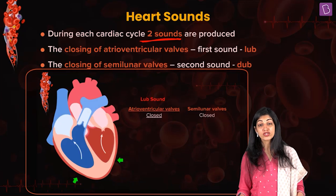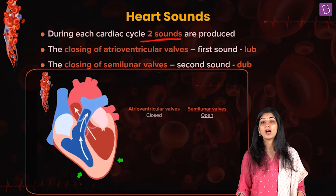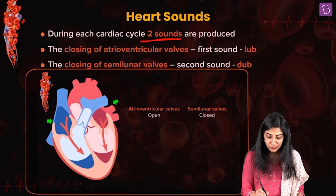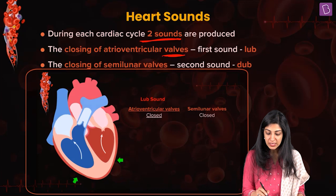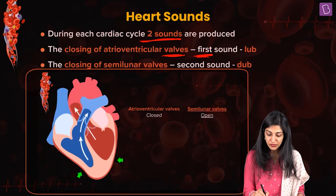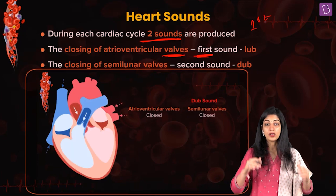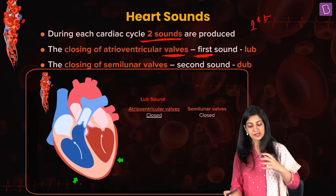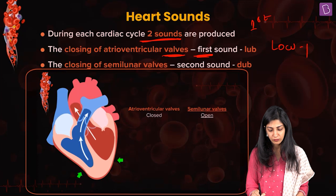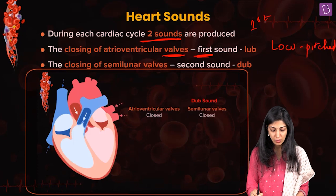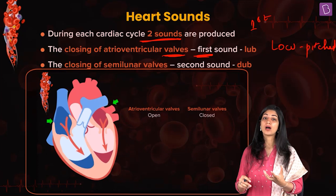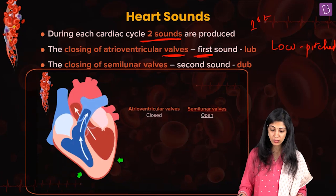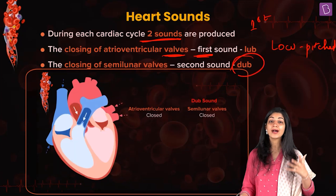If the sounds are not normal, that means the heart is not functioning properly. The closure of the atrioventricular valves produces the first heart sound — the lub sound — which is a low pitch sound. The second sound, caused by closure of the semilunar valves, is the dub sound, which is a high pitch sound.